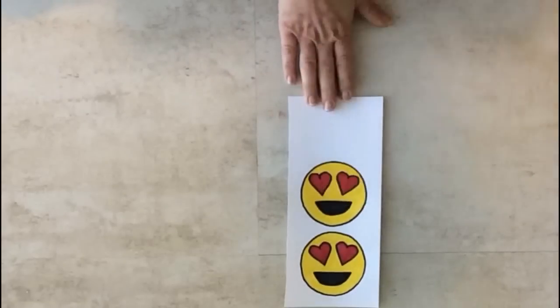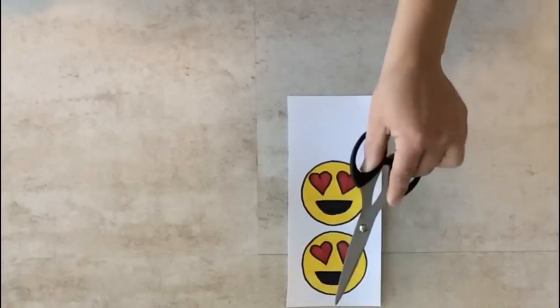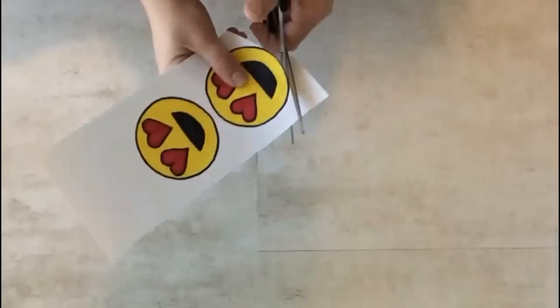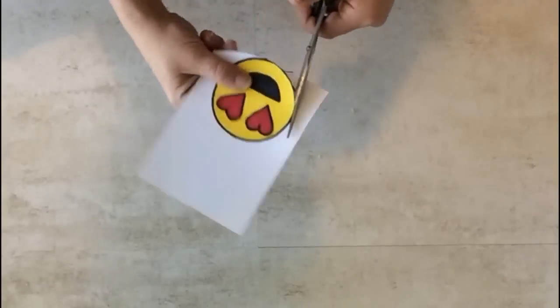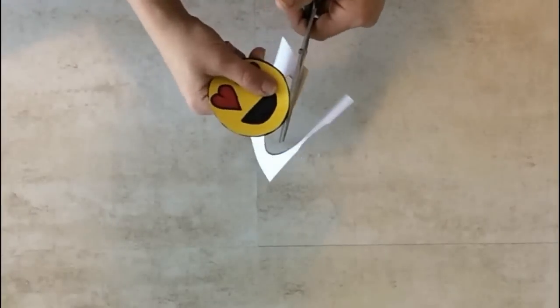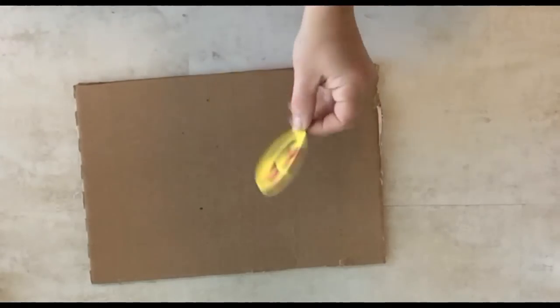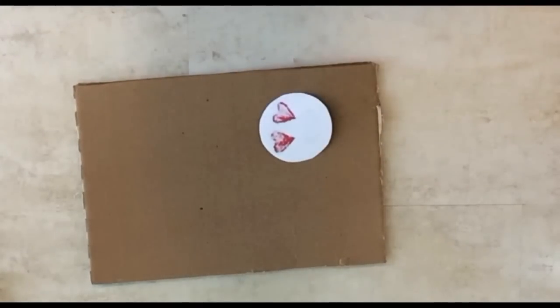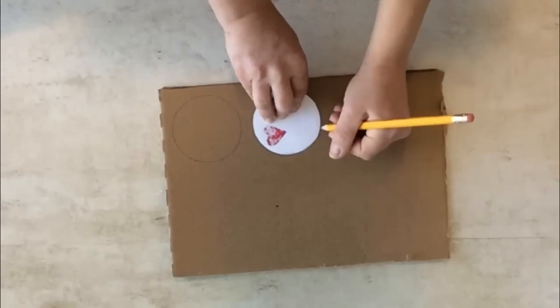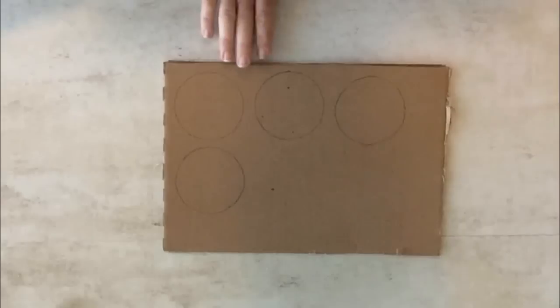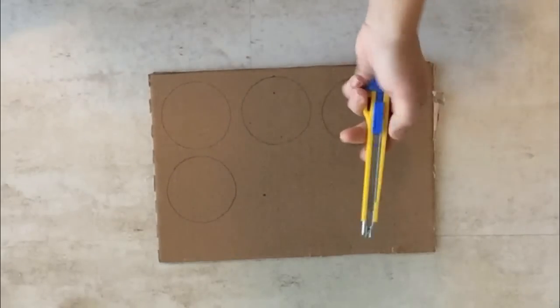First, with your printed or hand drawn emojis, you're going to cut it out with your pair of scissors. Next, with your piece of cardboard, you're going to trace around both of your emojis with your pencil or pen. Then cut them out with a pair of scissors or an exacto knife if you prefer.